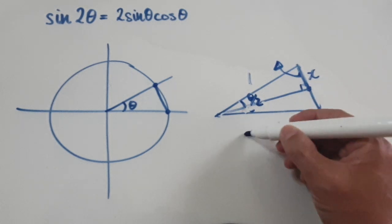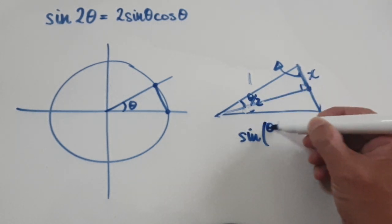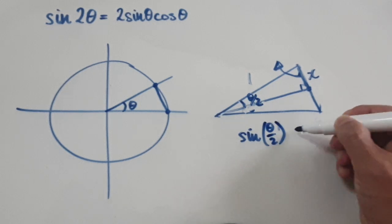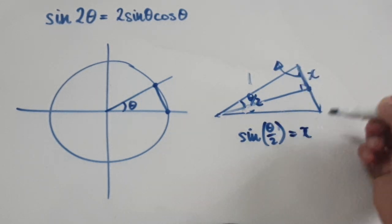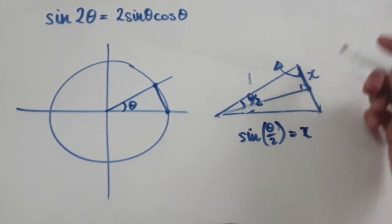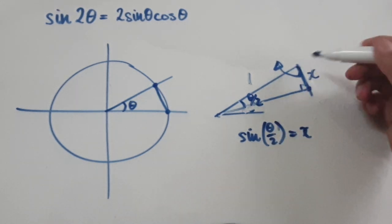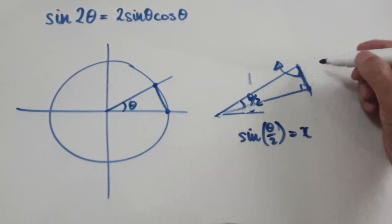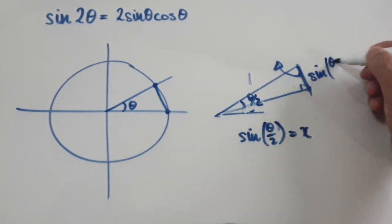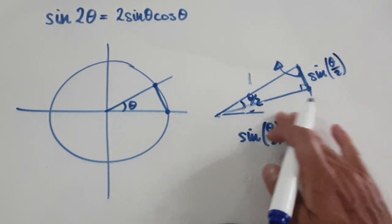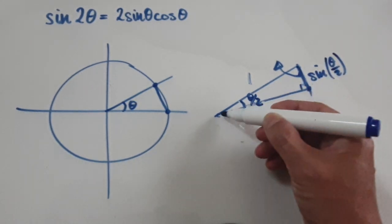This angle here would be theta over 2 — half of it. You would use sine: sine of the angle, which happens to be theta over 2, equals x over 1, which is x. So this length here from here to here is sine(theta/2).